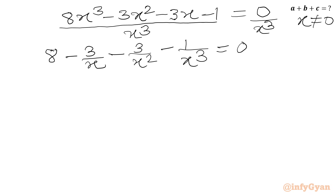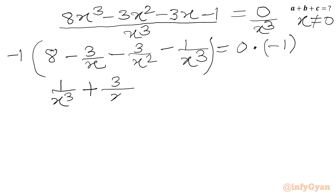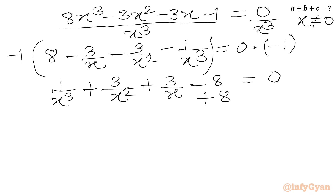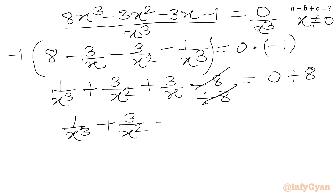Now we multiply both sides by -1, giving us: 1/x³ + 3/x² + 3/x - 8 = 0. Then we add 8 to both sides, so -8 and +8 cancel from the LHS, and we write: 1/x³ + 3/x² + 3/x = 8.